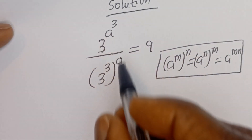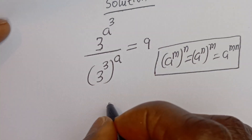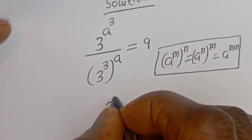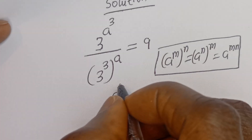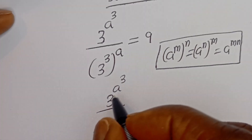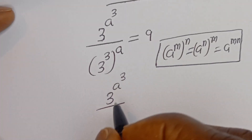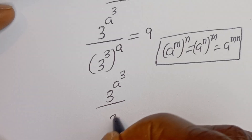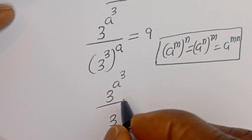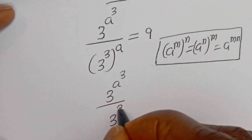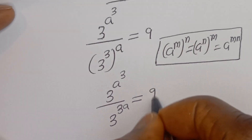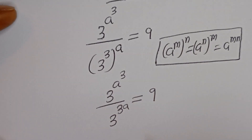Then this can be written as 3 to the power of A to the power of 3, divided by 3 to the power of 3 multiplied by A. This is 3A, is equal to 9.